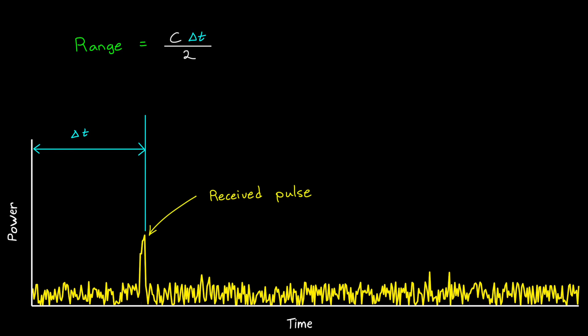The range to the object is calculated by determining the round trip distance that light would have traveled in that amount of time. There's two things I want to point out. The first is that the pulse isn't a single point in time, but it has width to it, in our case 1 microsecond.